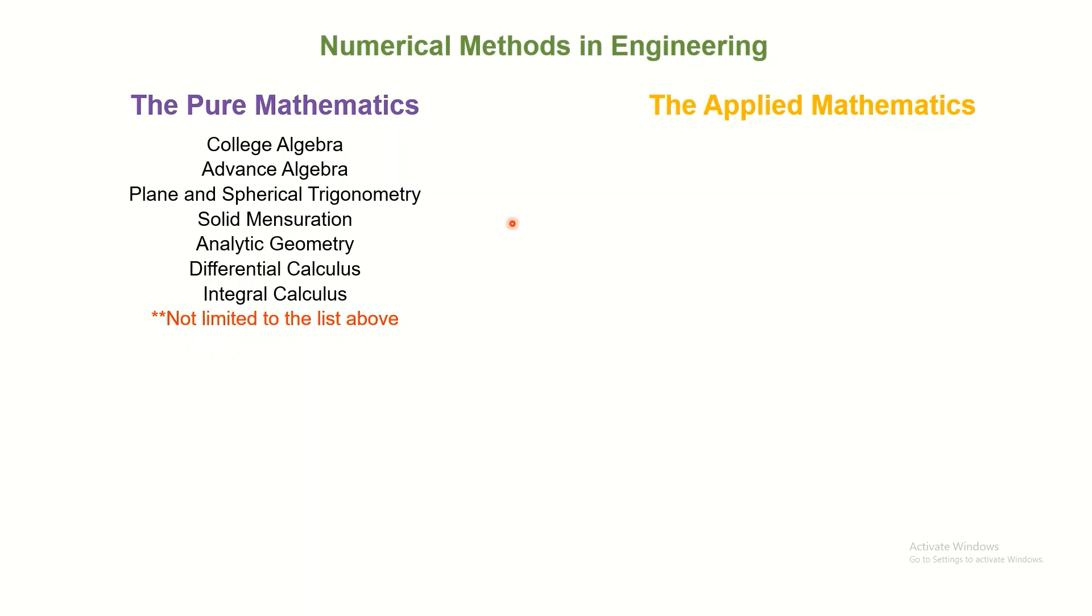On the other hand, applied math is the application of mathematical methods in different fields. In short, it is the use of math for practical applications.